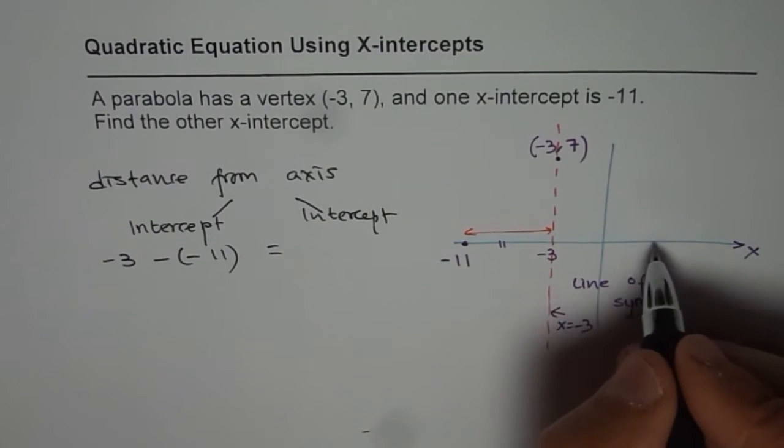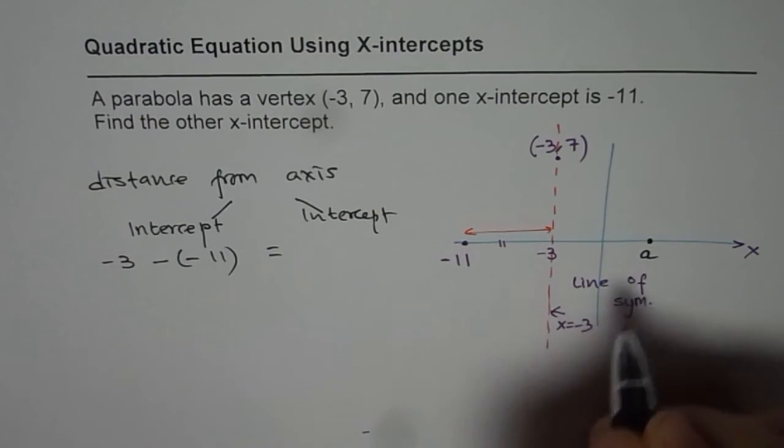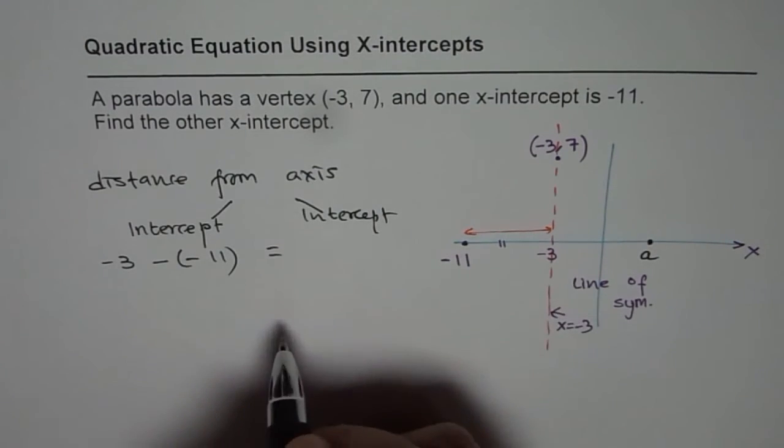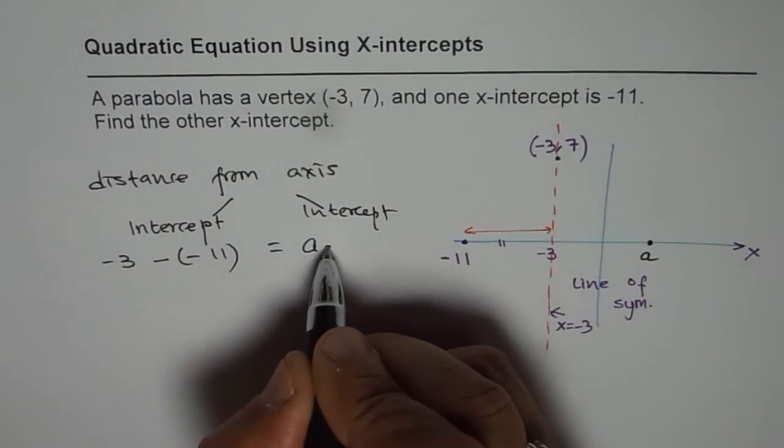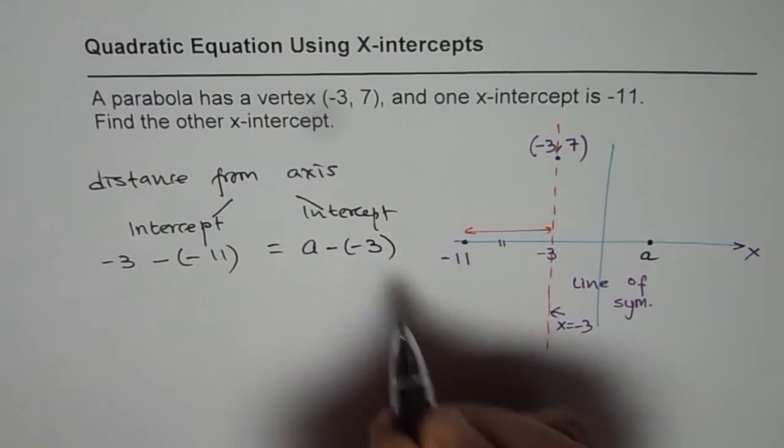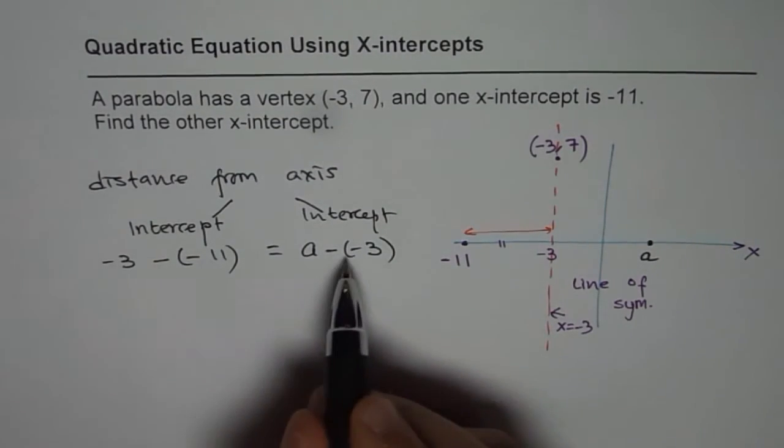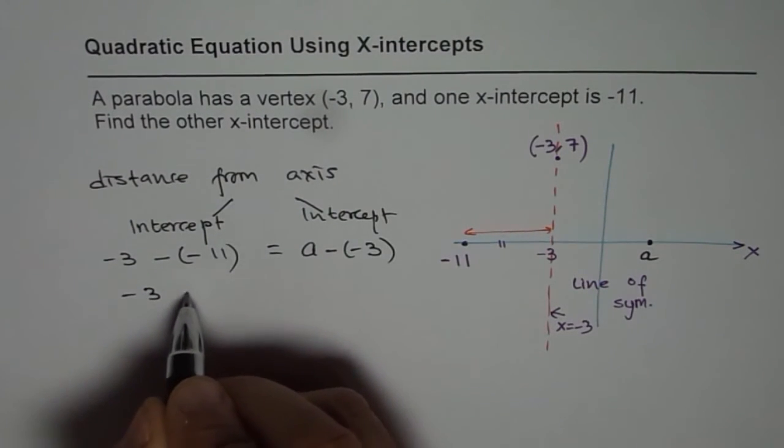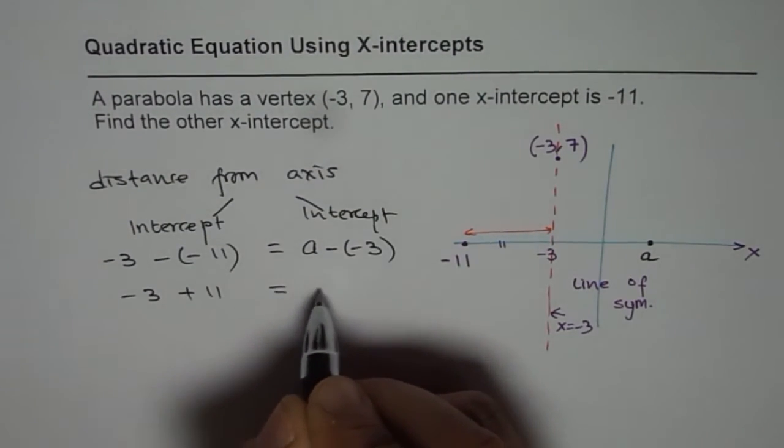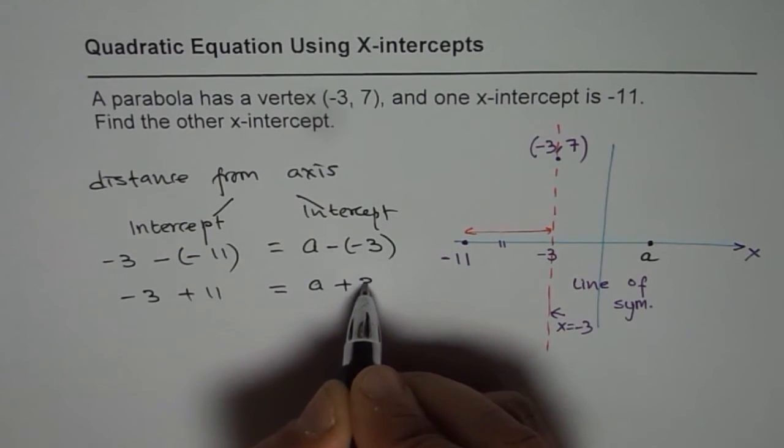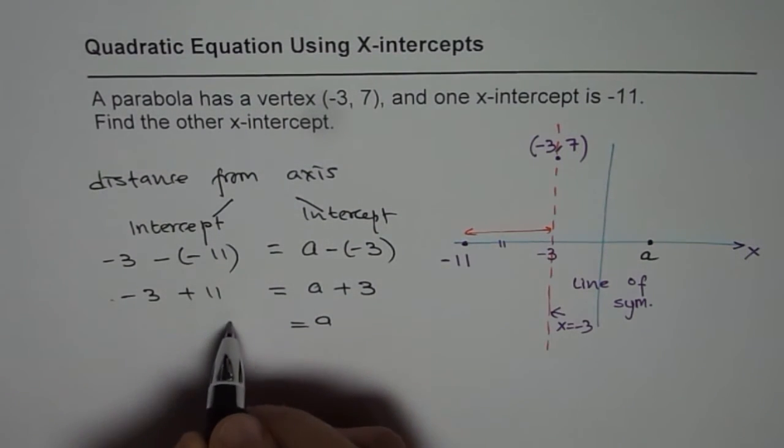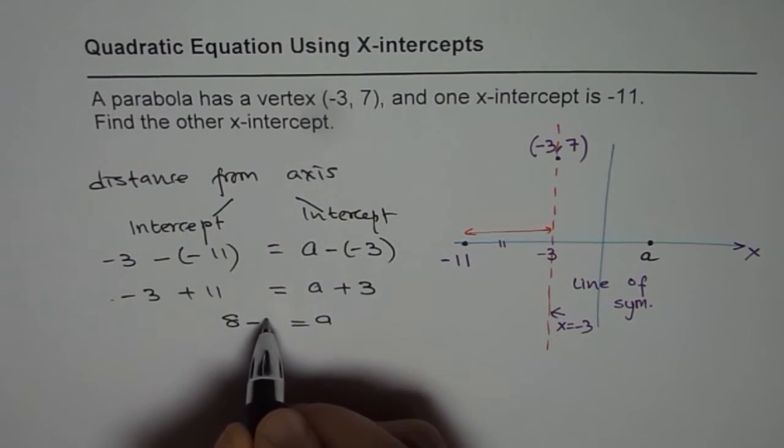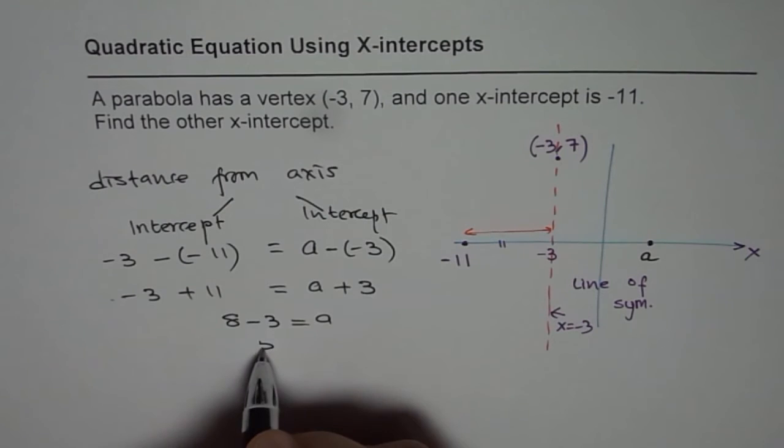And let us say the other point is somewhere there and let us call it A. In that case, that distance should be same as this distance. Therefore, it should be A minus of -3 should be exactly same. So from here, we can solve for A. So we get -3 + 11 = A + 3 or A is equals to -3 + 11 is 8 and we will take 3 away from 8. So we get A as 5.